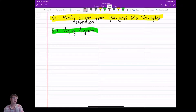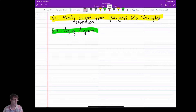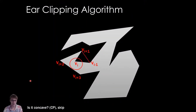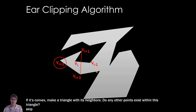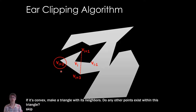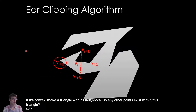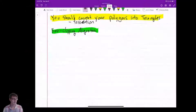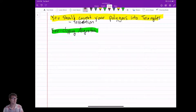There's one thing you might have noticed we missed in the algorithm. I said: make a triangle, and then check if any vertex is inside my triangle. But how do you find out if a point is in a triangle or not? We haven't learned that yet, so I'm going to briefly show you an algorithm for determining whether a point is inside a triangle.